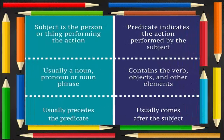A subject is the person or thing performing the action. It usually is a noun, pronoun, or noun phrase, and it usually precedes the predicate. A predicate indicates the action performed by the subject. It contains the verb, objects, and other elements, and it usually comes after the subject.